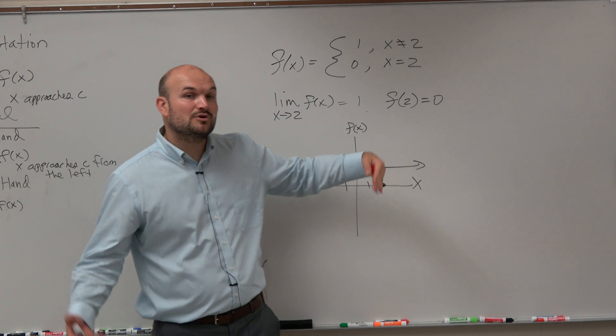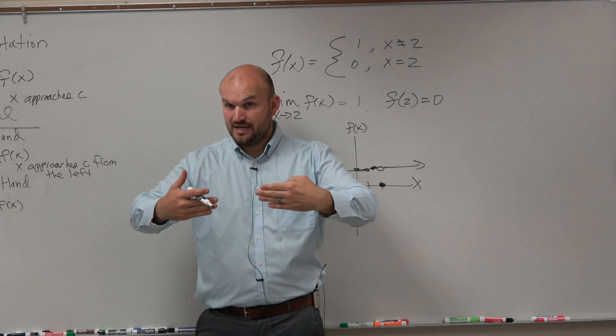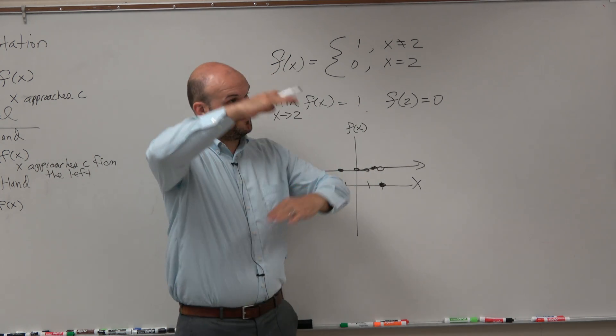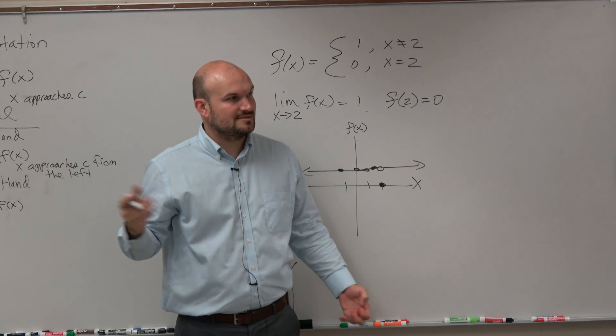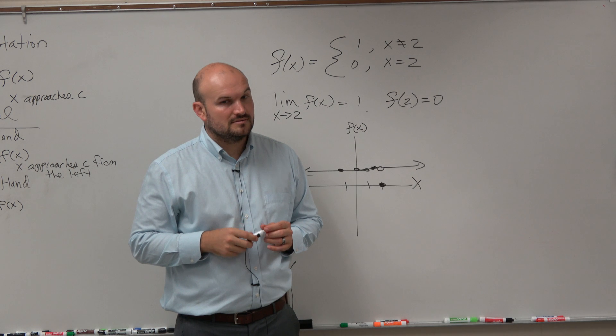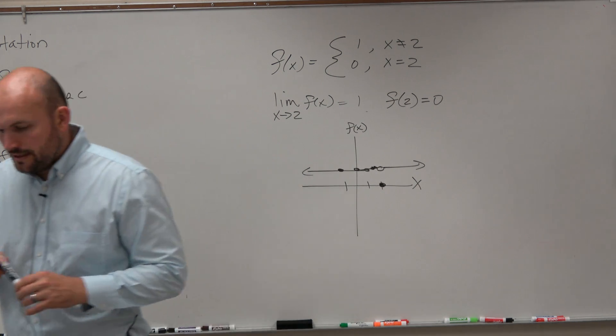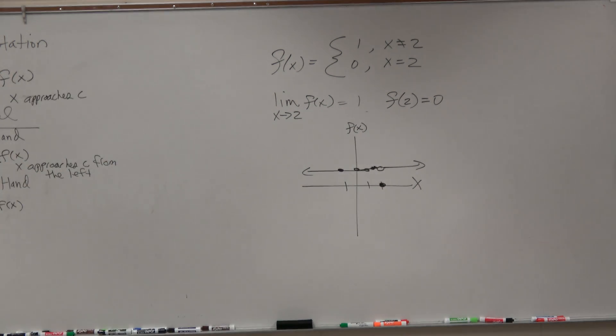And it has to approach from the left and from the right. So, if we're going at different values or if it's only one-sided, then the general limit doesn't exist. Does that make sense? Okay. So, what I'd like you to do is